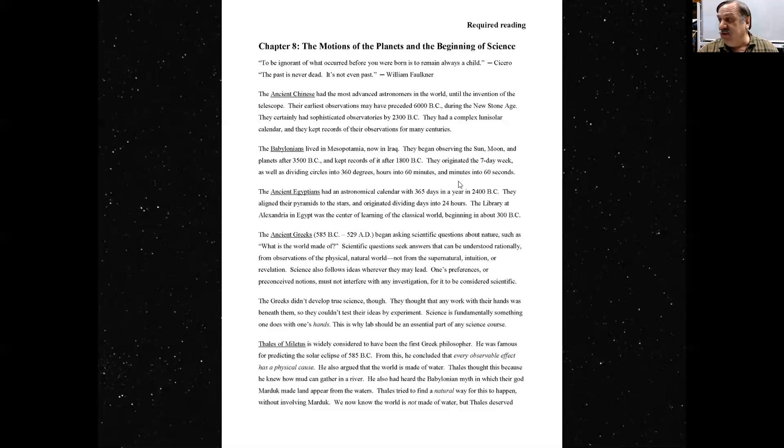The Babylonians originated the seven-day week. They could see Mercury, Venus, Mars, Jupiter, and Saturn, the bright planets in the sky. They just looked like bright stars, but they could see they move relative to other stars throughout the year. Of the five planets they could see, plus the sun and moon made seven. So they considered seven a lucky number, and therefore, they originated the seven-day week.